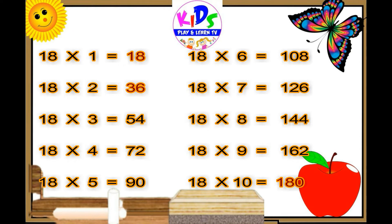18 ones are 18. 18 twos are 36. 18 threes are 54. 18 fours are 72. 18 fives are 90. 18 sixes are 108.